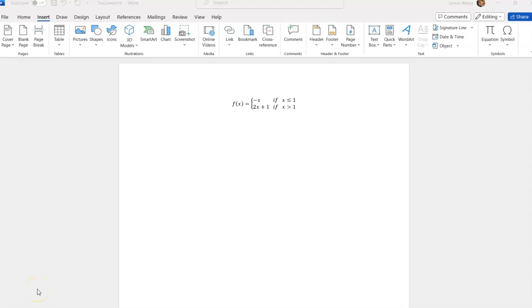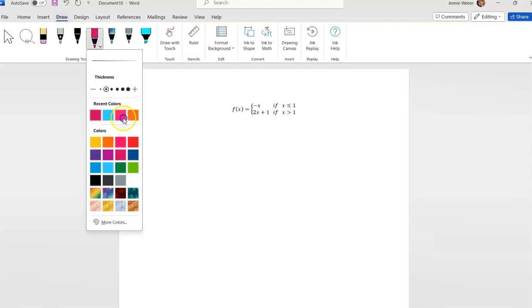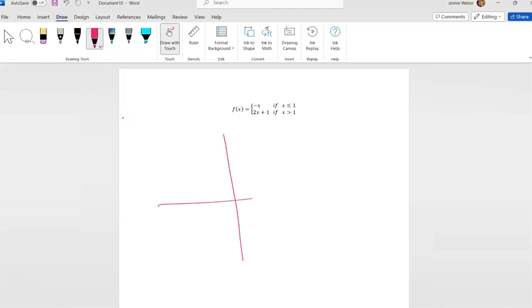We need to graph this piecewise function. You can see we've got two parts to it. When I go to graph this, I usually do this in two parts. I start by graphing both equations in their entirety.